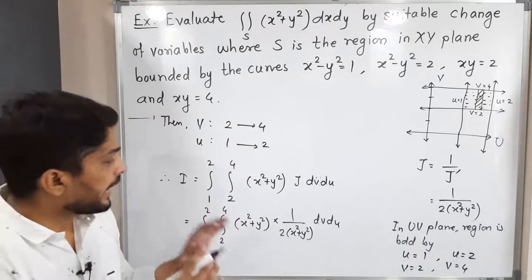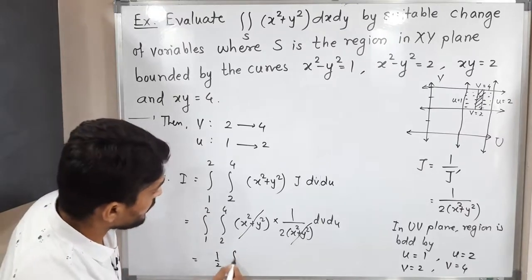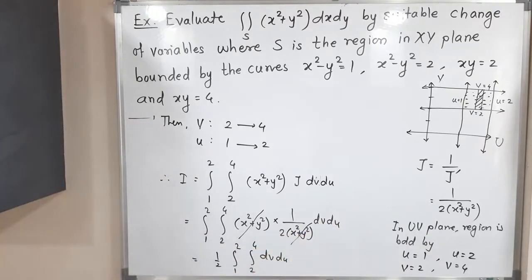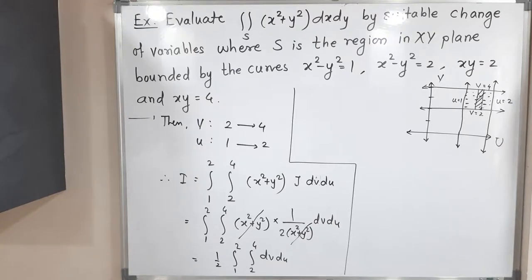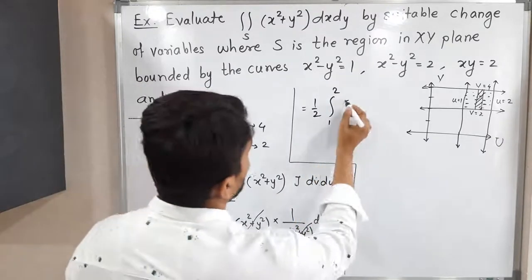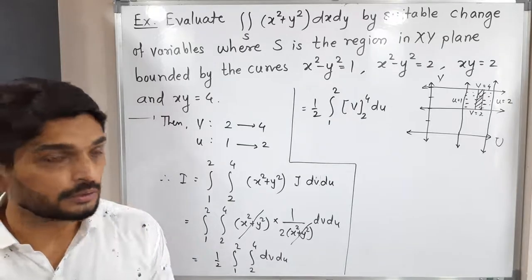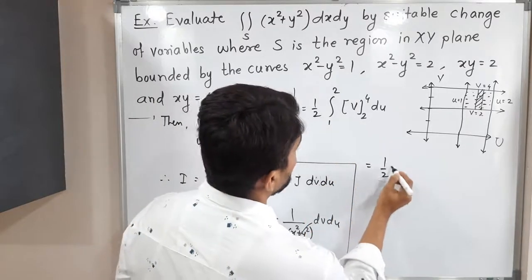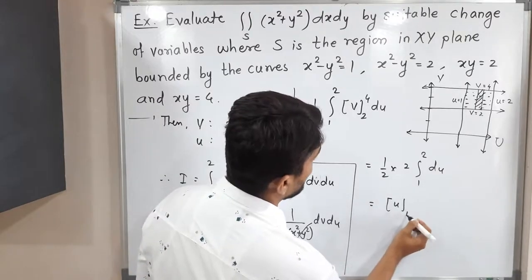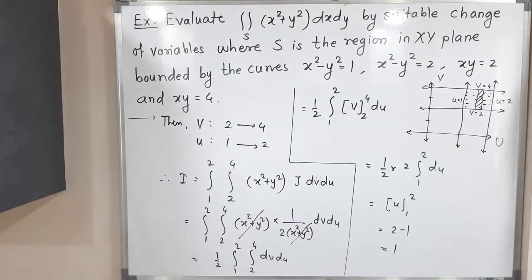The (x² + y²) terms cancel, leaving 1/2 as a constant outside. So we have (1/2) × integration 1 to 2, integration 2 to 4 of dv du. Integrating with respect to v first: [v] from 2 to 4 = 4 - 2 = 2, so we have (1/2) × 2 × integration 1 to 2 du = integration 1 to 2 du = [u] from 1 to 2 = 2 - 1 = 1. So the final answer is 1.